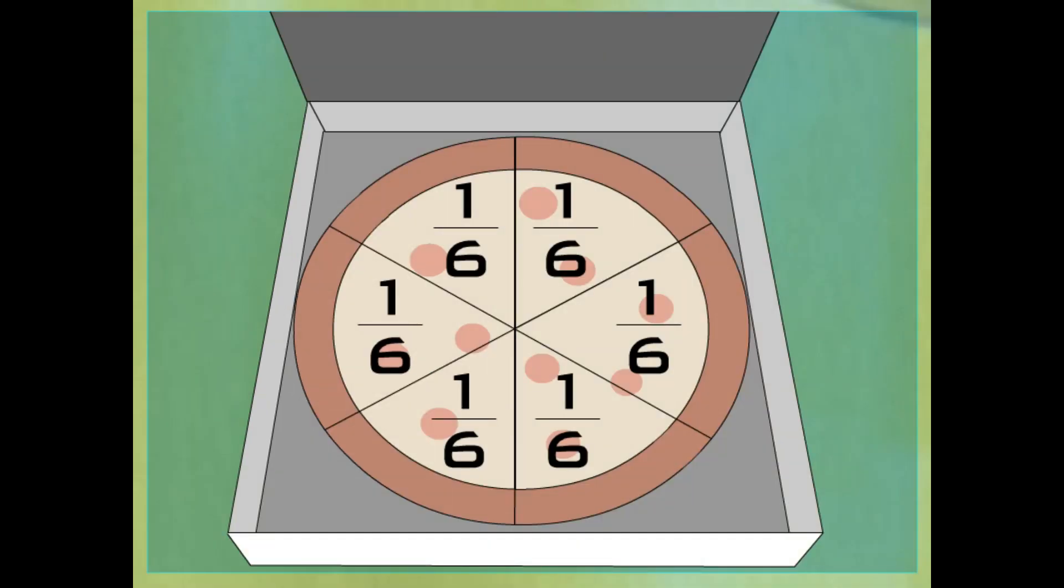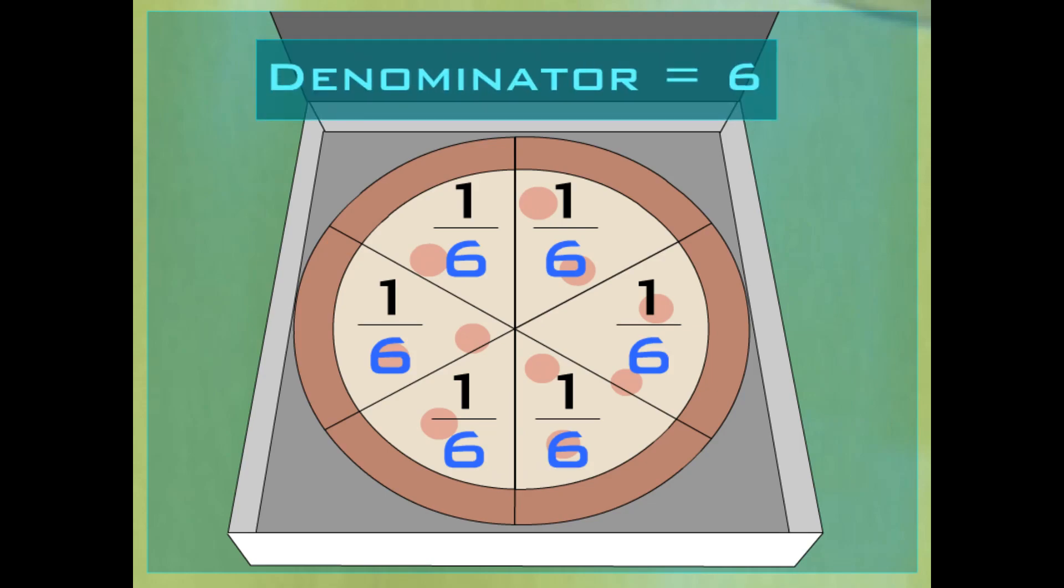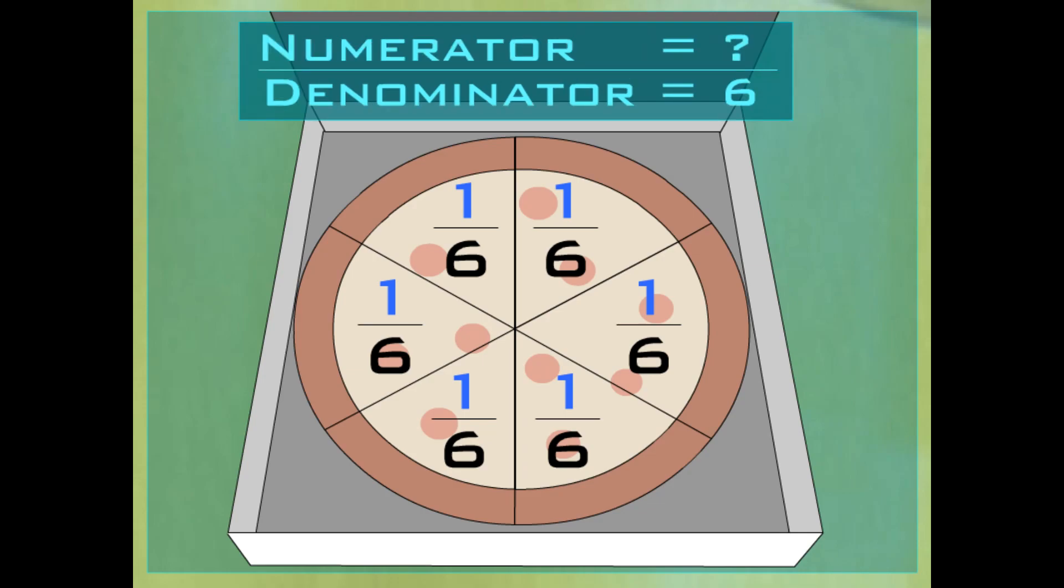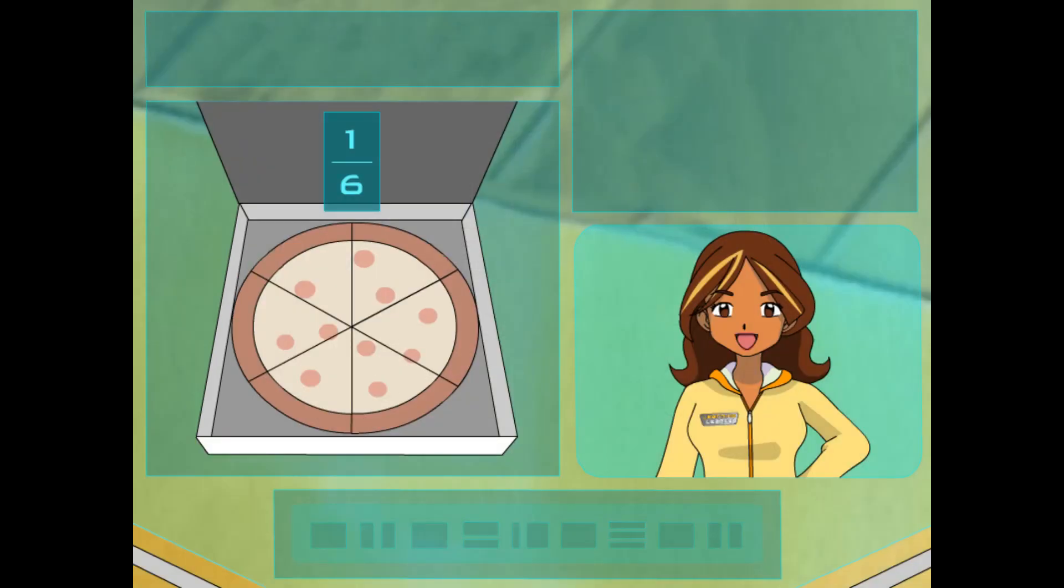That's great. Well, then you'll remember that when we look at the fraction one-sixth, the number on the bottom of the fraction is the total number of parts. Right. The denominator. Like with your pizza, the denominator is six because there are six slices of pizza. Exactly. And then the number on the top of the fraction is how many parts we're using out of the total number. And that's the numerator. Excellent. So, the numerator in the fraction one-sixth is the number one? You got it.